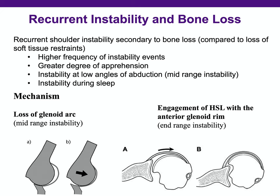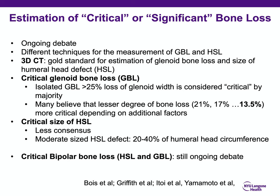Estimation of critical or significant bone loss is an ongoing debate. Different techniques have been described for measuring glenoid bone loss and Hill-Sax lesion. 3D CT is the gold standard. Critical bone loss on the glenoid side is defined as loss of more than 25% of glenoid width, though newer studies describe lower thresholds. For the Hill-Sax lesion, there is less consensus, but a defect more than 30–40% of humeral head circumference is generally considered critical in an isolated situation.